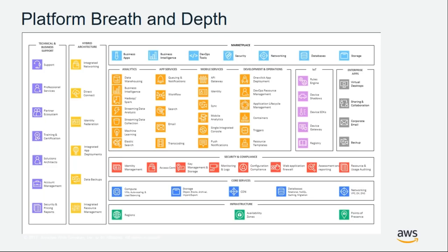Why do folks choose AWS? One primary reason is the breadth and depth of services. Today, AWS has over 100 plus services across multiple domains — analytics, app services, mobile development, security, and pure infrastructure as a service including compute, storage, network, and databases. You have the ability to choose individual services or combine multiple services to create an entire suite of applications — the choice completely resides with you.